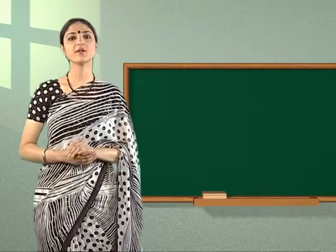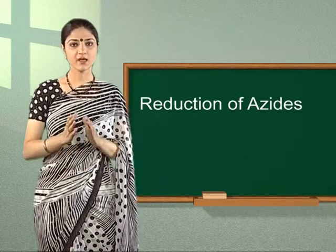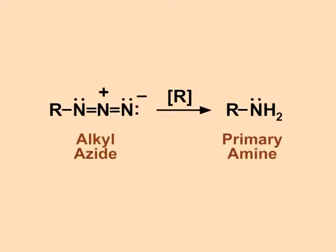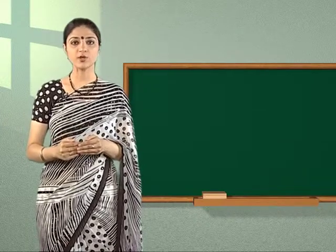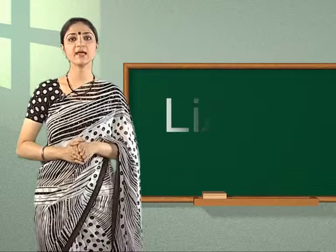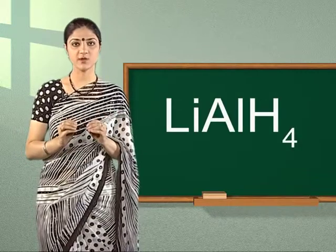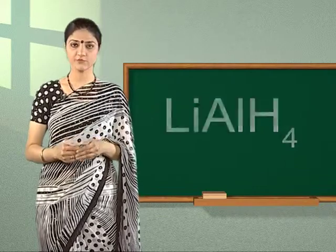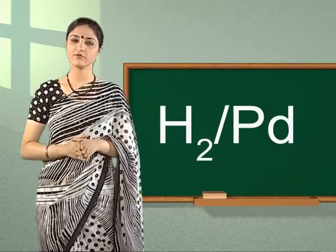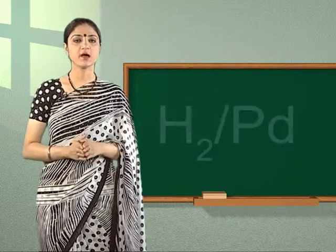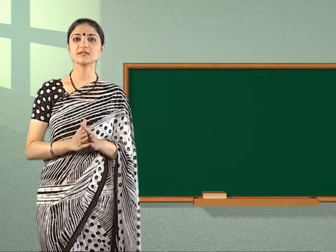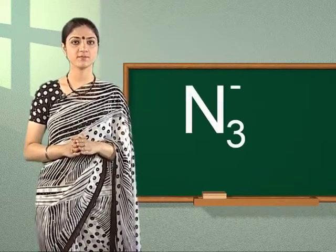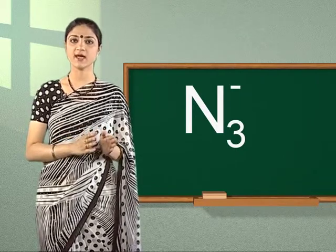Let us now learn about reduction of azides. Azides (RN3) can be reduced to primary amines (RNH2). Reagents used are lithium aluminum hydride (LiAlH4) in ether solvent, or catalytic hydrogenation such as hydrogen in presence of palladium. Alkyl azides are prepared by nucleophilic substitution (SN2 reaction) from primary or secondary alkyl halides.